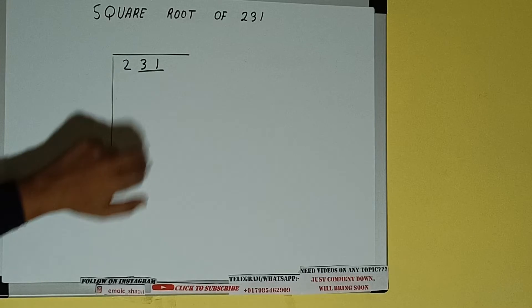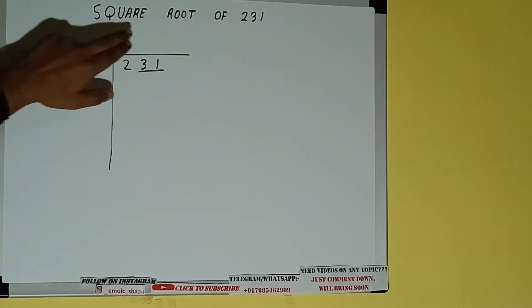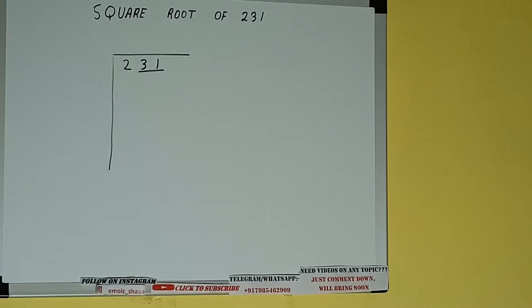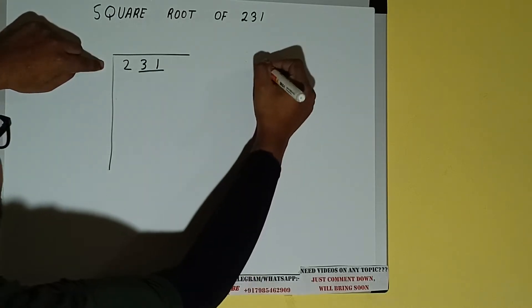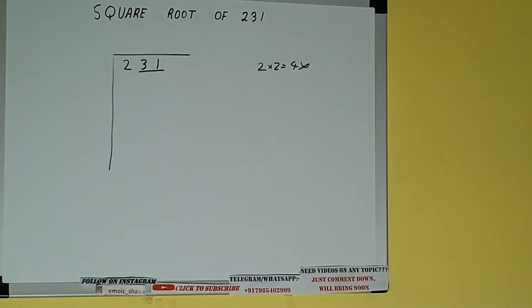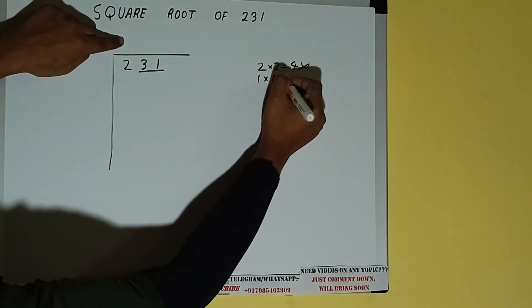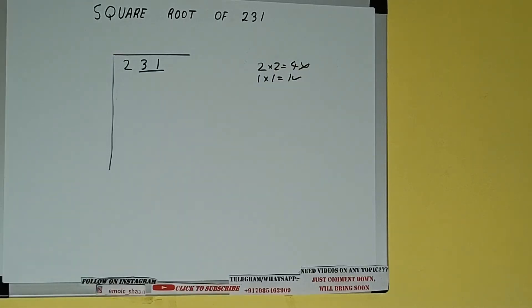So first we'll divide this two, and then we'll bring down the pair. The rule is whatever number we write here, we have to write here also. So if we write two here and two here, it will be four, which is greater than two, so we cannot use it. If we write one here and one here, it will be one, which is good to use.